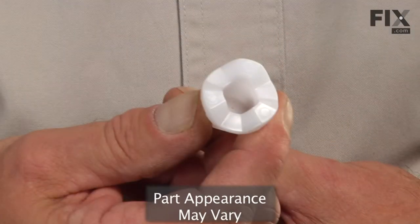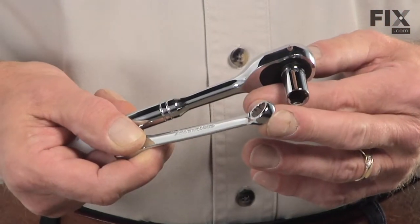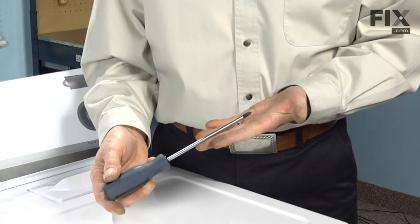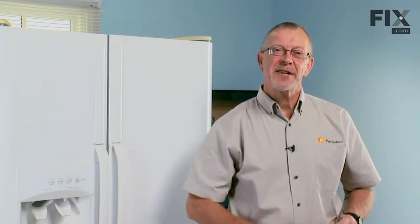Today we're going to show you how to change the door closure bearing on your refrigerator. It's a pretty easy job, only need a few tools. You'll need a three-eighths ratchet or three-eighths wrench, Phillips screwdriver and a small flat blade screwdriver. Let me show you how it's done.